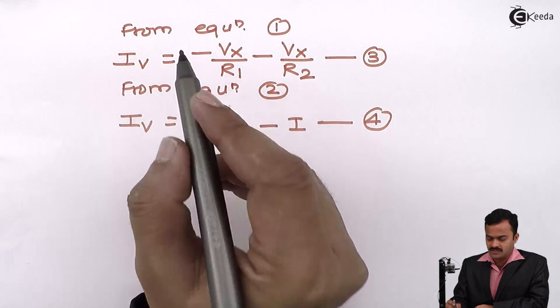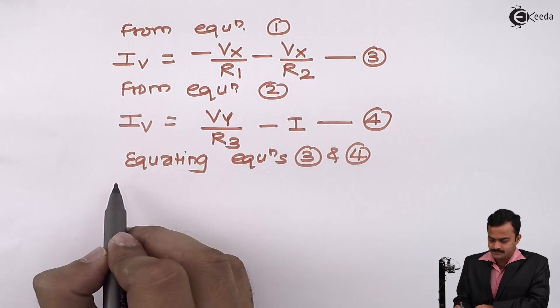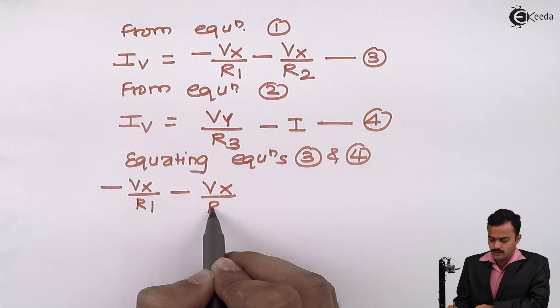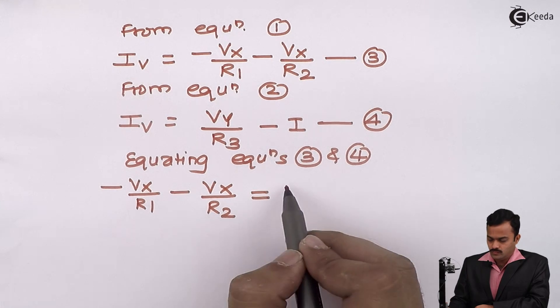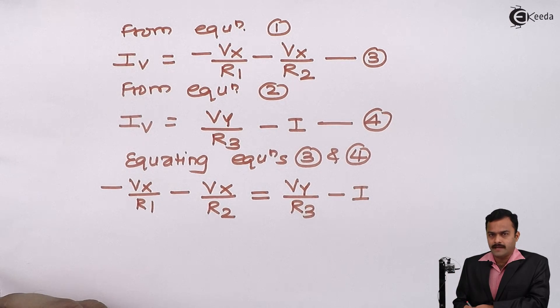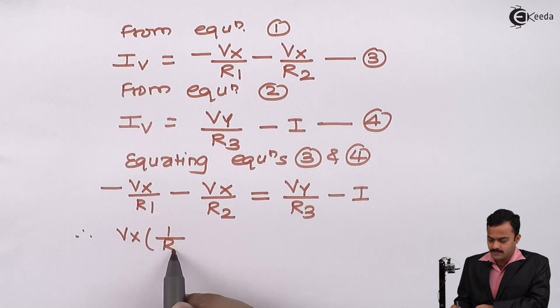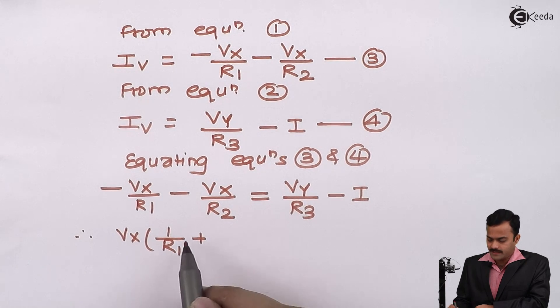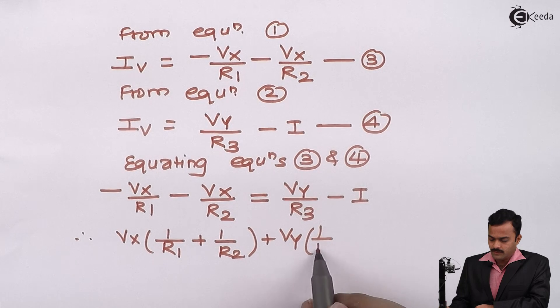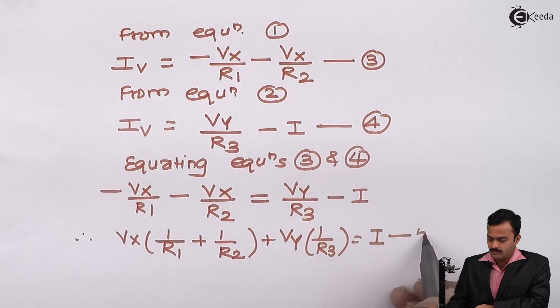I can equate these two equations and I can say minus Vx by R1 minus Vx by R2 equal to Vy by R3 minus I. So after rearrange the terms, I am getting Vx in a bracket 1 by R1 plus 1 by R2 plus Vy by 1 by R3. I will take this minus I on this side, equation number 5.